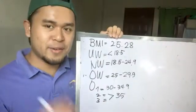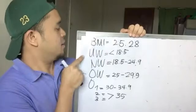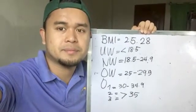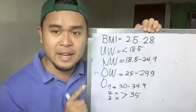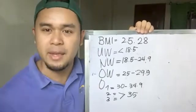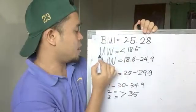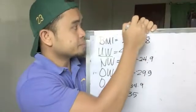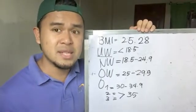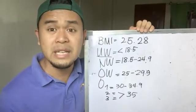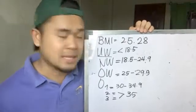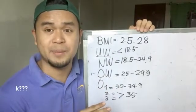Looking at the BMI ranges: underweight is a BMI of less than 18.5. So if your BMI is around 16 or 17-point-something, you are underweight, meaning you need to gain weight to reach a normal BMI.